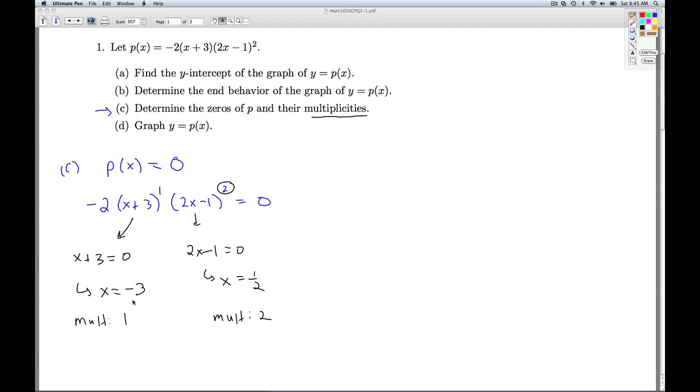Now what's important about multiplicities? Since X equals negative 3 has an odd multiplicity, this means that we're going to cross through the X axis at the point negative 3 zero. And since we have an even multiplicity at a half, that means we're going to touch the X axis at the point one half zero.